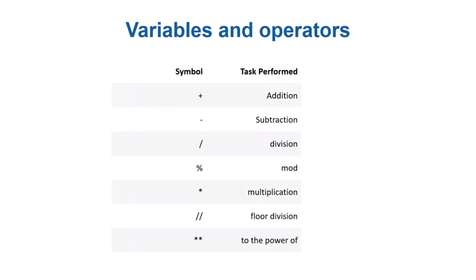In the last video we saw variables — particularly integer type and floating point variable types. We also saw briefly in Jupyter Notebook complex and string types as well.